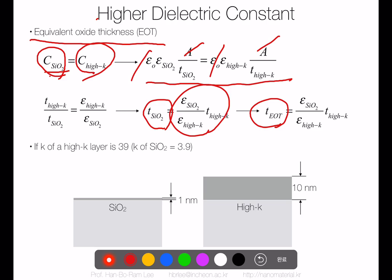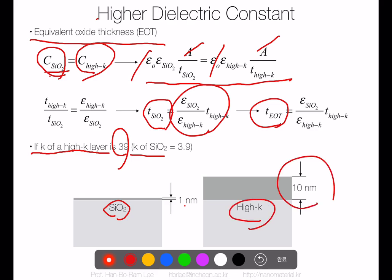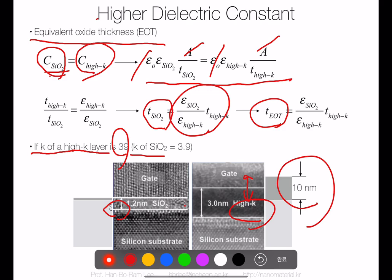We must carefully consider the thickness of the dielectric material because thickness is very important to prevent leakage current. If a high-k layer has a k value of 39 and silicon oxide has a k of 3.9 — ten times higher — then if silicon oxide thickness is 1 nm, the same capacitance high-k material can be 10 nm thick. This is why we need high-k material: to prevent gate leakage. Hafnium oxide was the first ALD material adopted for the silicon industry, around 2007.